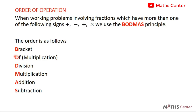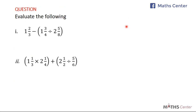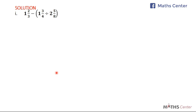The acronym BODMAS will help you to remember this: it stands for Brackets, Of, Division, Multiplication, Addition, and Subtraction. Remember that 'of' in this case represents multiplication. Let's take some examples. We are supposed to evaluate the following. We take the first question: 1 whole number 2 over 3 minus, then we have a bracket, 1 whole number 3 over 4 divided by 2 whole number 5 over 8.